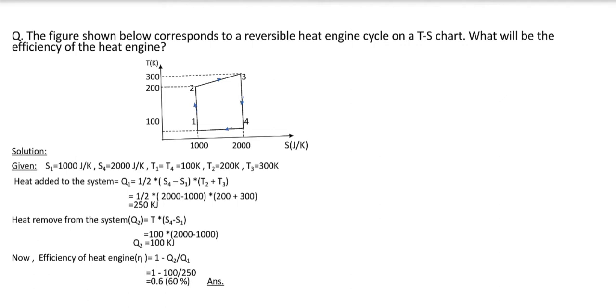As you know friend, the formula of efficiency is 1 minus q2 by q1. So to know the value of efficiency, you just have to calculate the value of q2 and q1.